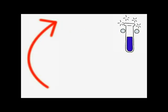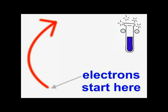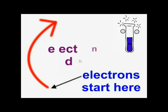What these curly arrows do, is show us where the electron or electrons start, at one end the arrow, and where they end up at the head of the arrow.